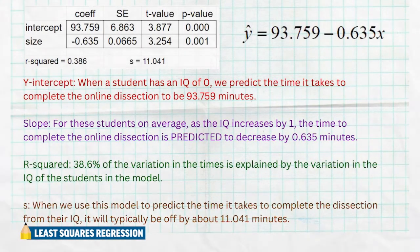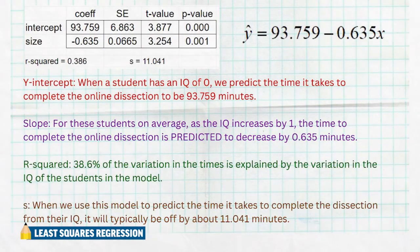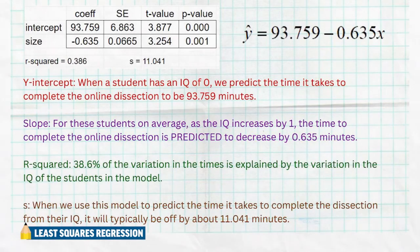The data does show a lot of scatter, even though there is an overall negative linear form. This shows that our linear regression model is not going to be very reliable because of how low the R-squared value is. Finally, S tells us that when we use this line to take an IQ and predict the time to complete the dissection, we're typically going to be off by 11 minutes. The times range from about 10 to 60 minutes, so being off by 11 minutes in that range is quite a lot. That makes sense because this data has a lot of scatter, and many residuals are pretty large.